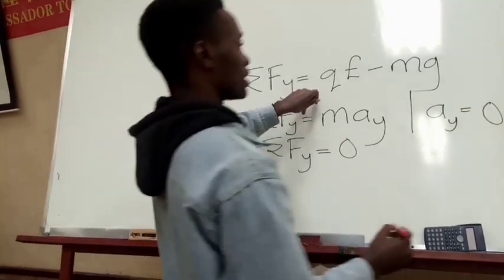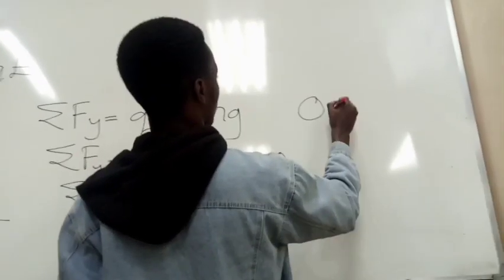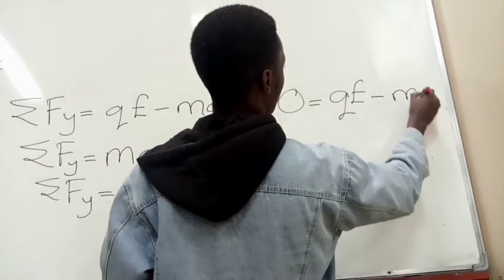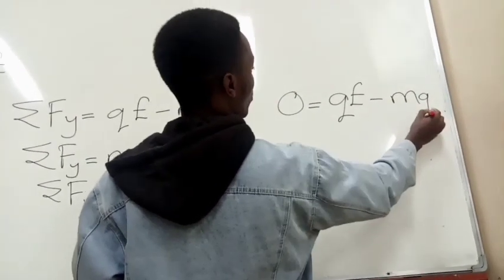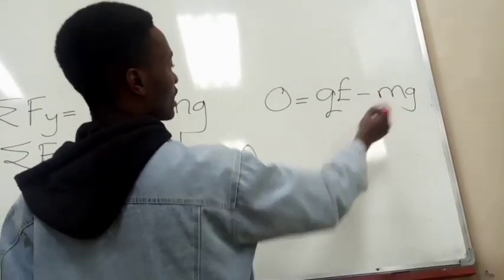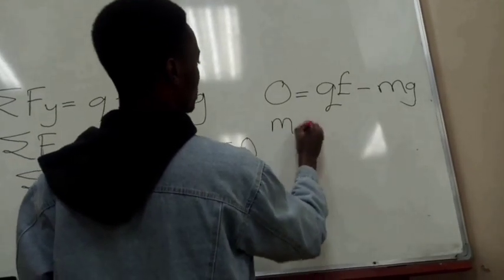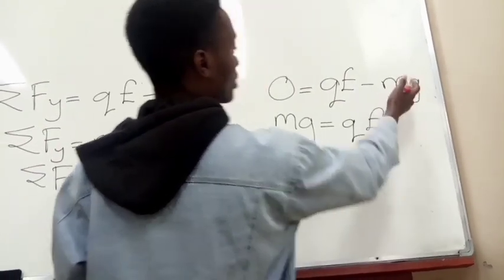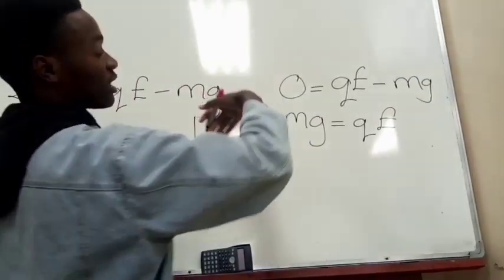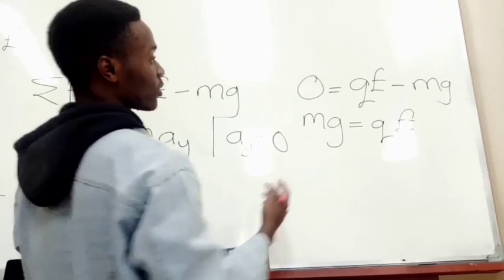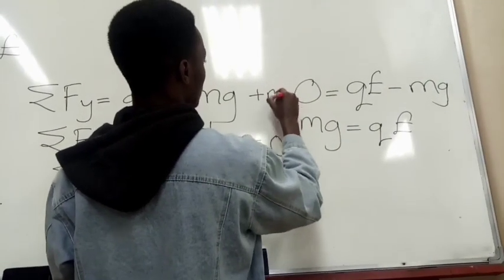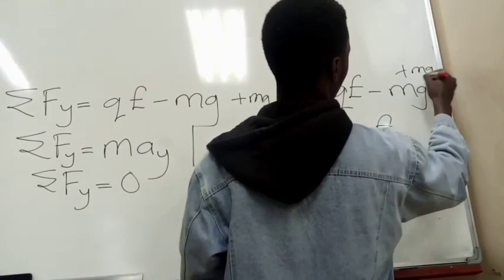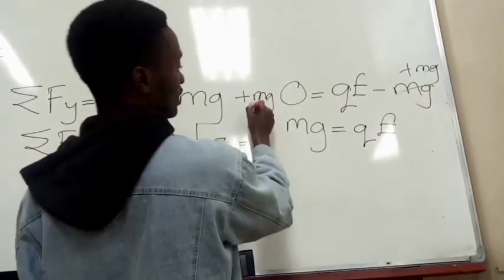Therefore, summation of forces in the y direction is equal to zero. Thus, we can conclude that zero is equal to qE minus mg. When we add mg to both sides, we'll be having mg being equal to qE. We cross the mg to the other direction, but in the actual sense, we add mg to both sides. So this mg cancels with this mg and this side we have mg.